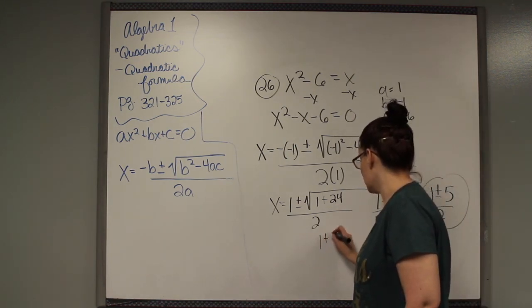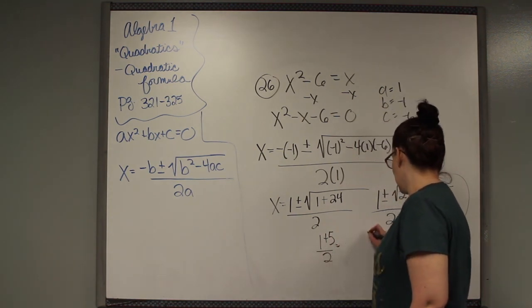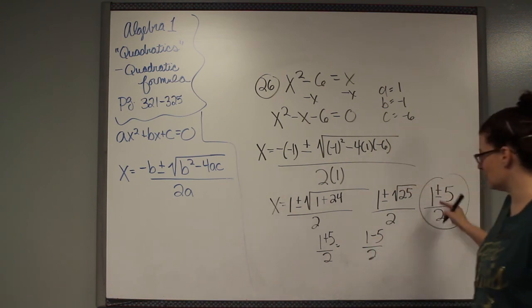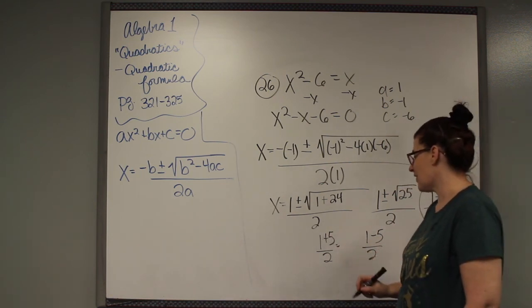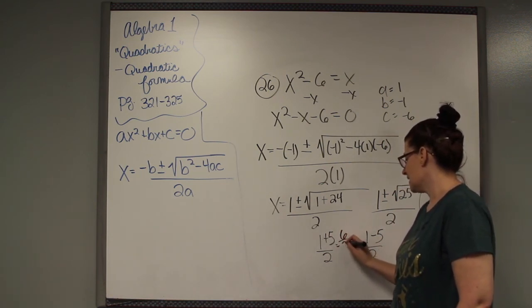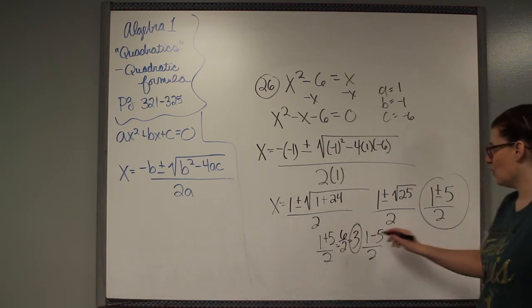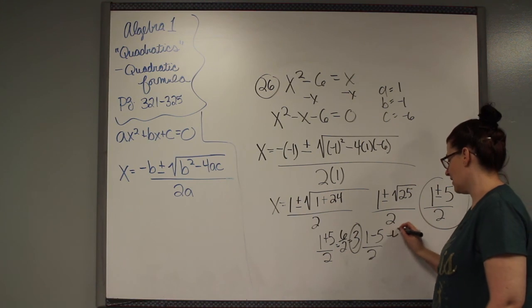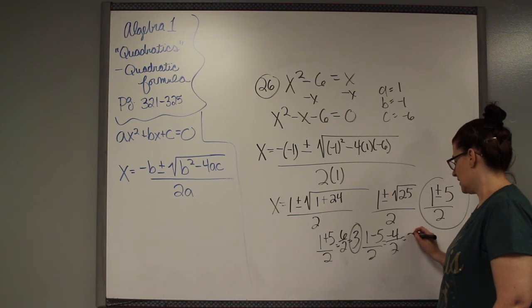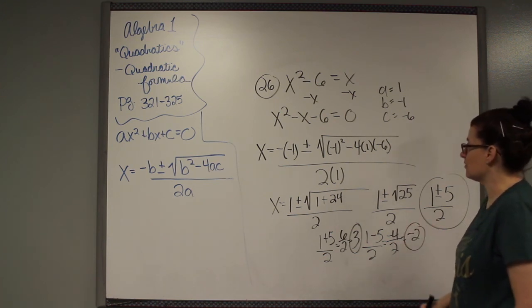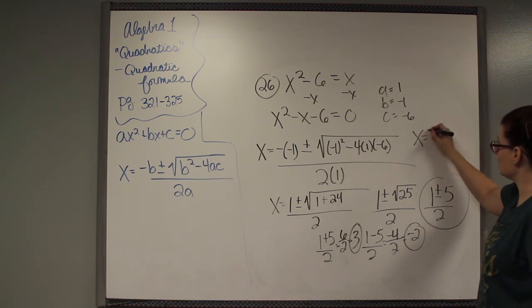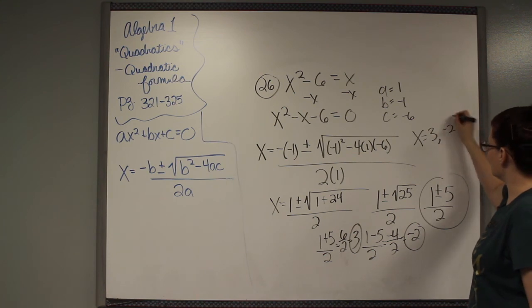1 plus 5 is 6. 6 over 2 equals 3. That's one answer. 1 minus 5 is negative 4. Negative 4 over 2 is negative 2. That's the other answer. So x equals 3 and negative 2.